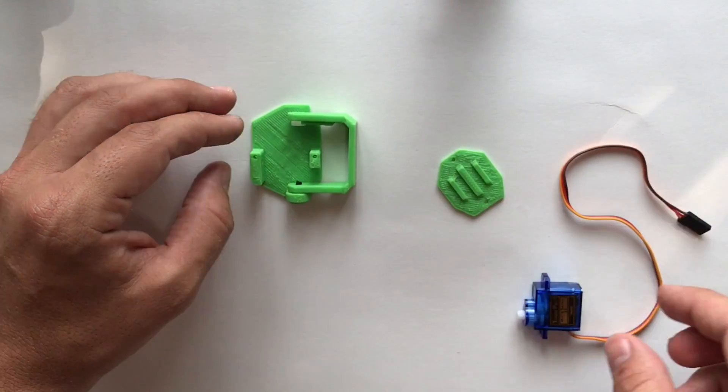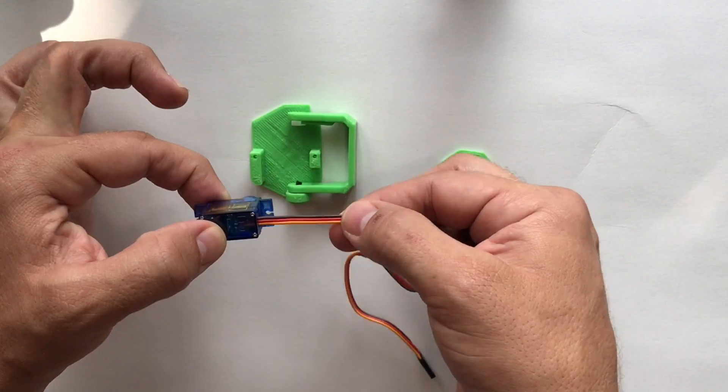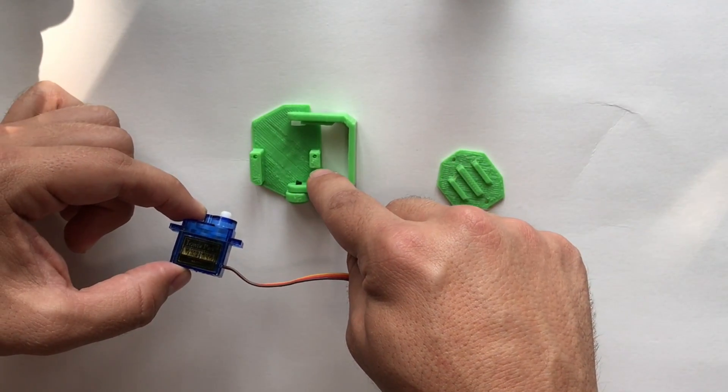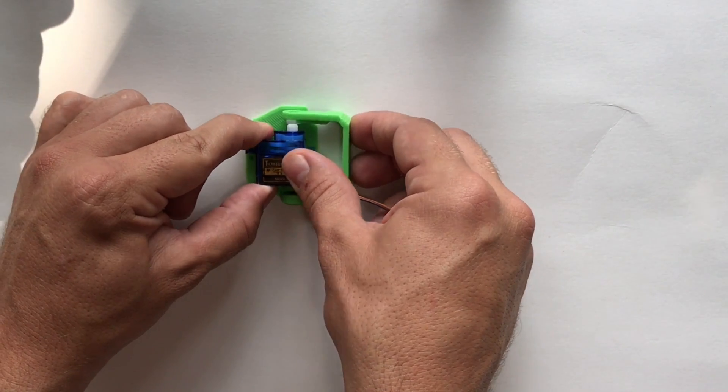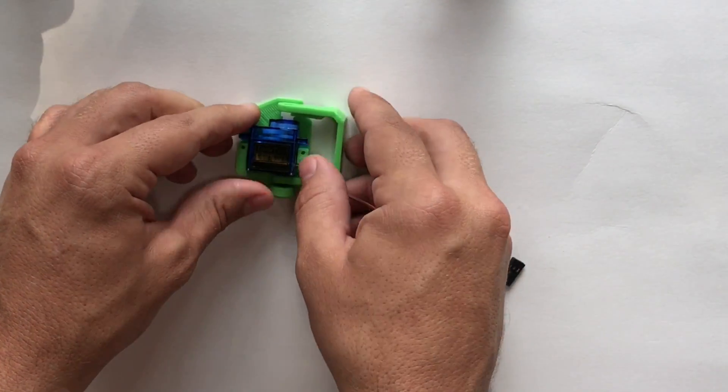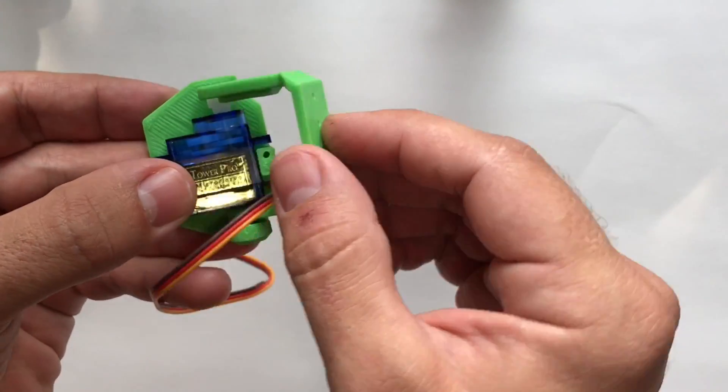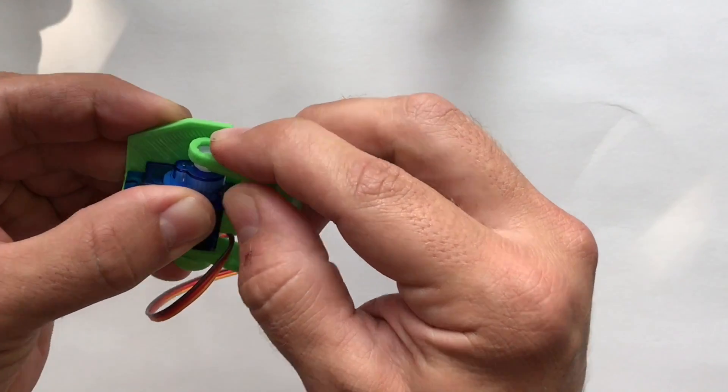What's going to hold that on is the servo. The wires come out the shorter end, which has some space there, so you press it in there like that. There you go, it's in there.